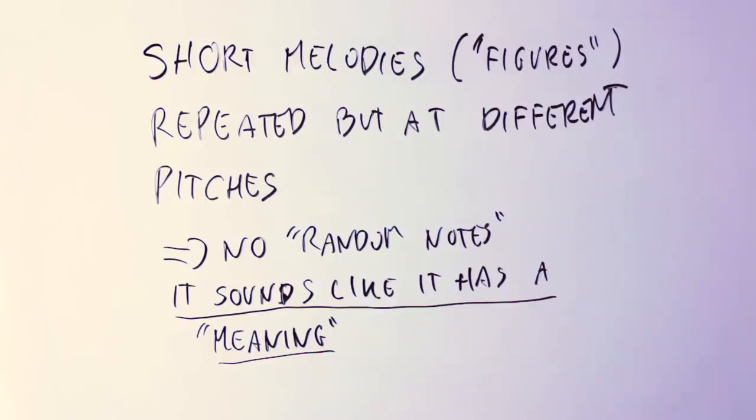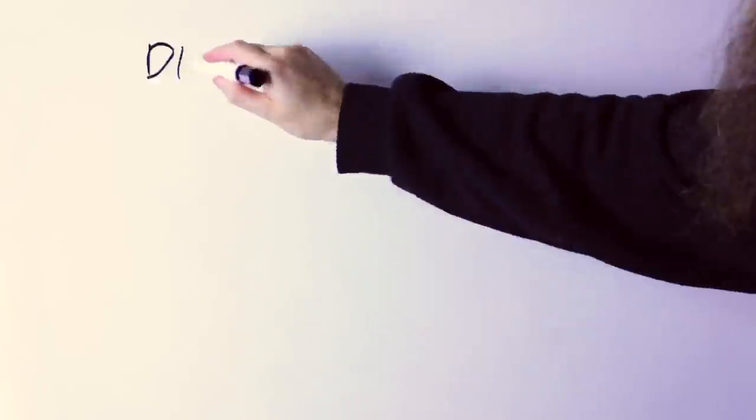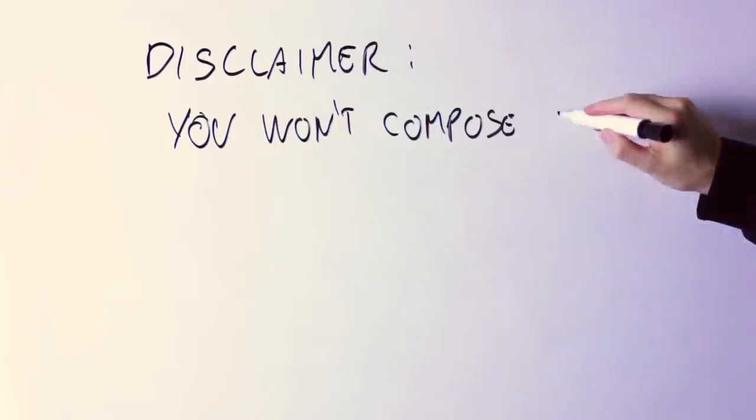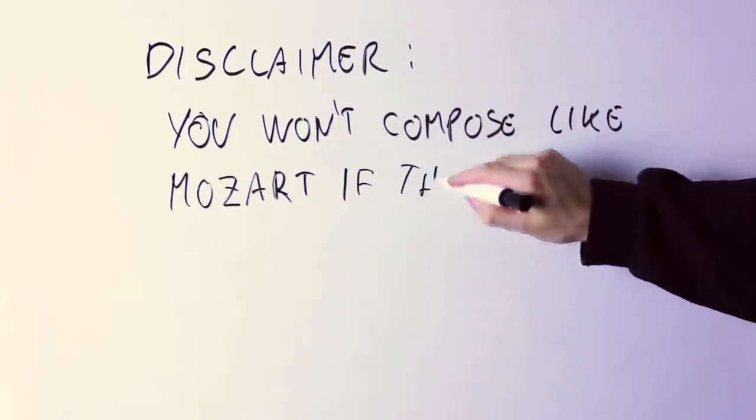For some reason we guitar players think that every time we play something then just after that we have to play something different. It would be much better instead to take a short phrase, a short figure and sequence it up and down a few times to give the idea that this melody is actually built out of something and not just random notes.